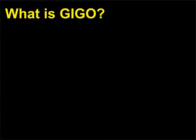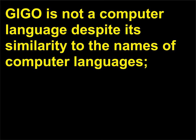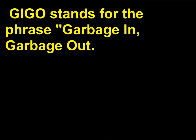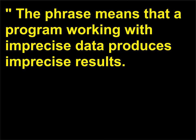What is GIGO? GIGO is not a computer language despite its similarity to the names of computer languages. Instead, it is an acronym for the truism that one gets out of something what one puts into it. GIGO stands for the phrase 'garbage in, garbage out,' meaning that a program working with imprecise data produces imprecise results.